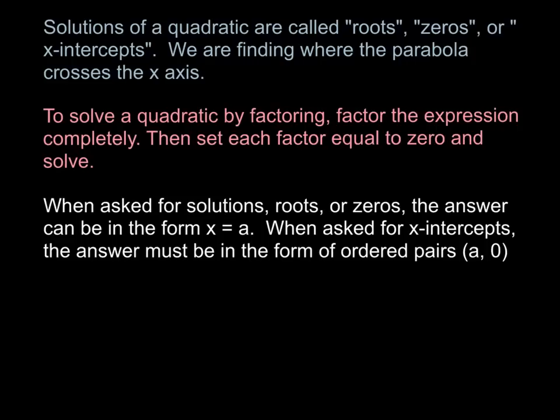Solutions of a quadratic are called roots, zeros, or x-intercepts — they all mean the exact same thing: where the parabola crosses the x-axis. To solve a quadratic by factoring, factor the expression completely, then set each factor equal to zero and solve. If the problem asks for roots or zeros, give x equals some value. But if it asks for x-intercepts, those are points on a graph, so you must give them as ordered pairs.